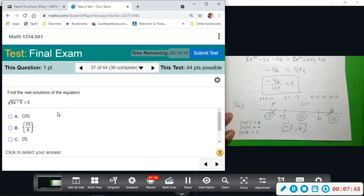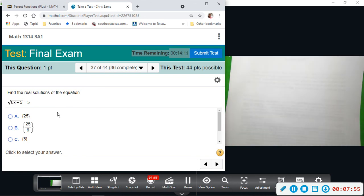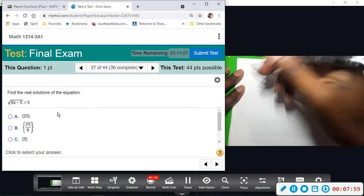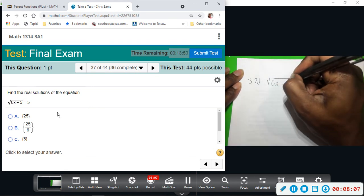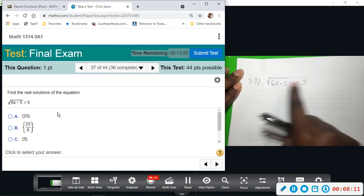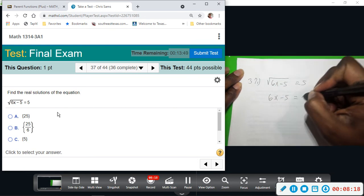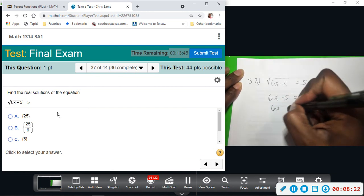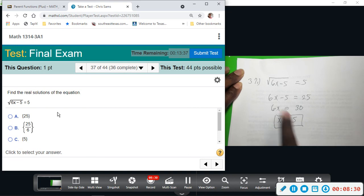This one wants us to find the real solutions of the square root equation. So we would do number 37, square root of 6x minus 5 equals 5. Alright, so we're going to square both sides to get rid of the square root. That would give us 6x minus 5, when you square that it would be 25. Add 5, 6x equals 30, divide by 6, x equals 5. And I believe if you plug that in, 6 times 5 is 30, 30 minus 5 is 25. So your solution x equals 5.